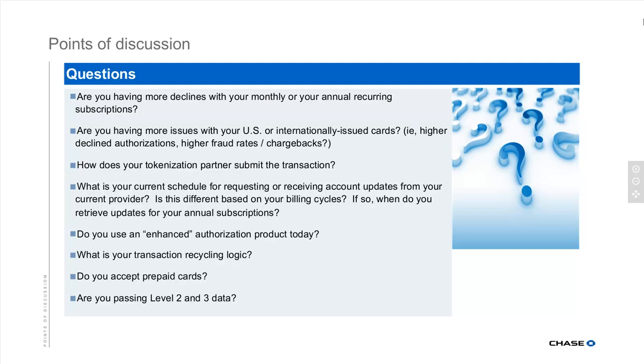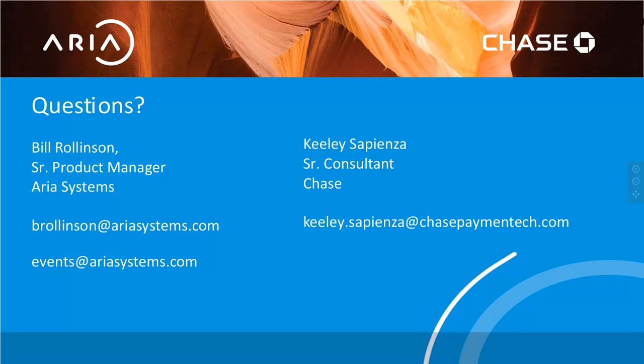Regarding whether processors are allowed to do expiration date front-end validations, and any difference between U.S. and global processors: from a Chase perspective, they process both U.S., Canada, and internationally. They will accept an expiration date as long as the month value is 01 to 12 and the year value is 01 to 99, and will pass that through to the issuer. They will also accept a blank expiration date and let the issuer decide. It's really up to the issuer at that point as to what they're going to accept or decline.